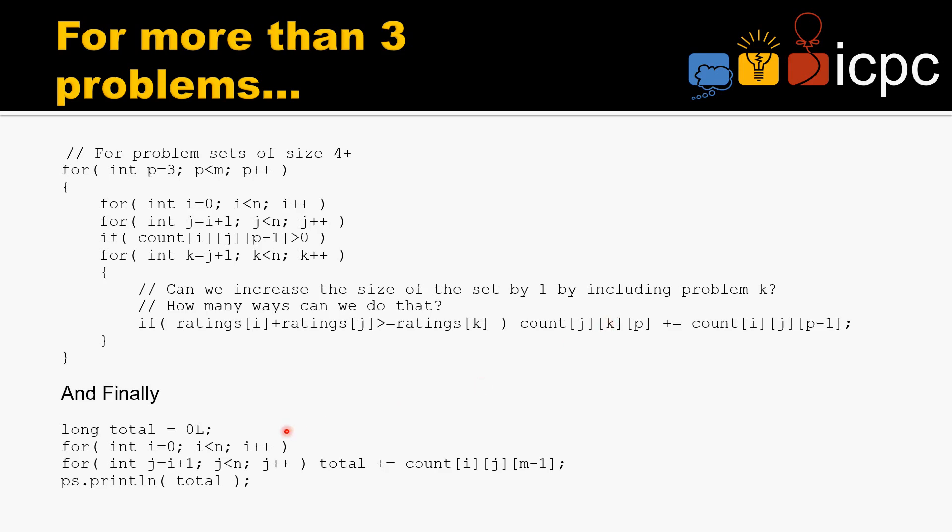And finally, we need to go through the list and find our total. So we go through i and j, total plus equals that in the last column, and we print the total. And that is the solution to this problem.